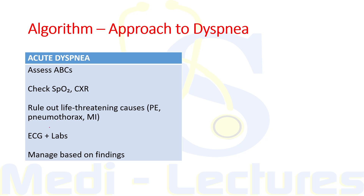If a patient with acute dyspnea presents to the emergency, we first assess the ABCs — airway, breathing, circulation. We check SpO2, connect oxygen if required, and order an urgent chest X-ray. We must rule out life-threatening causes like pulmonary embolism, pneumothorax, and myocardial infarction, simultaneously ordering ECG and lab parameters, then manage the patient based on these findings.